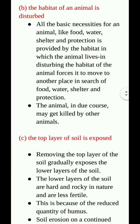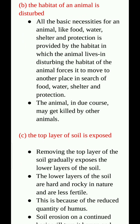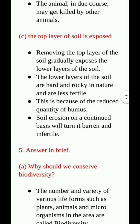The habitat of an animal is disturbed. All the basic necessities for the animal like food, water, shelter and protection are provided by the habitat in which the animal lives. Disturbing the habitat of the animal forces it to move to another place in search of food, water, shelter and protection. The animal may in due course get killed by other animals. The top layer of the soil is exposed, gradually revealing the lower layers which are hard, rocky and less fertile due to reduced humus. Continued soil erosion will turn land barren and infertile.